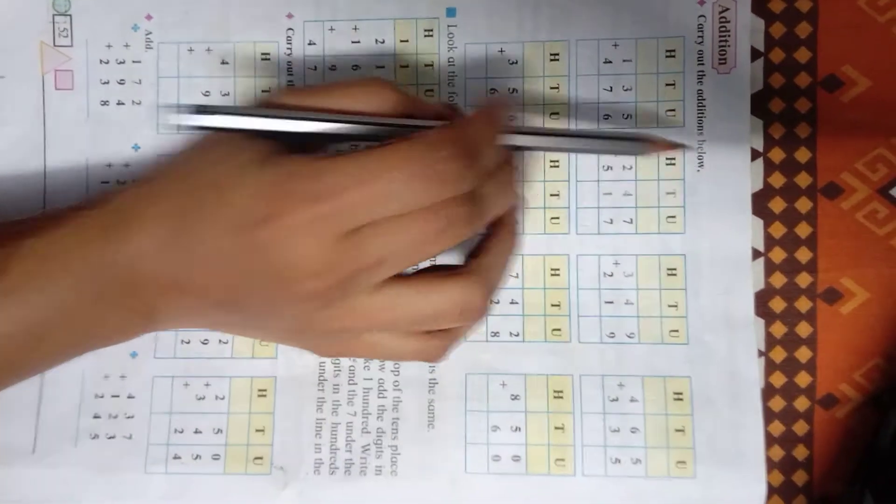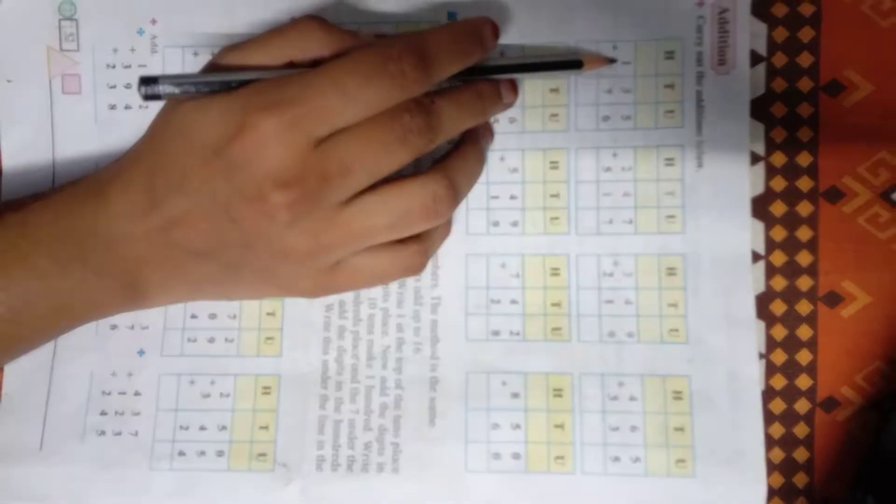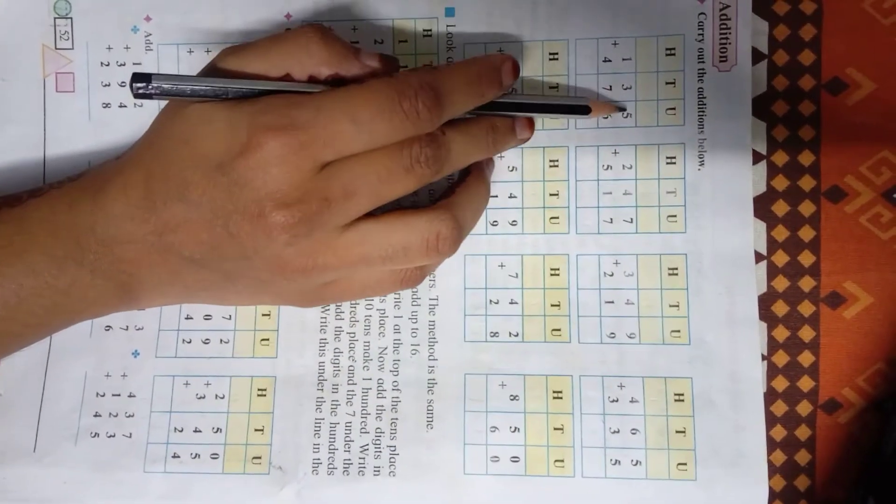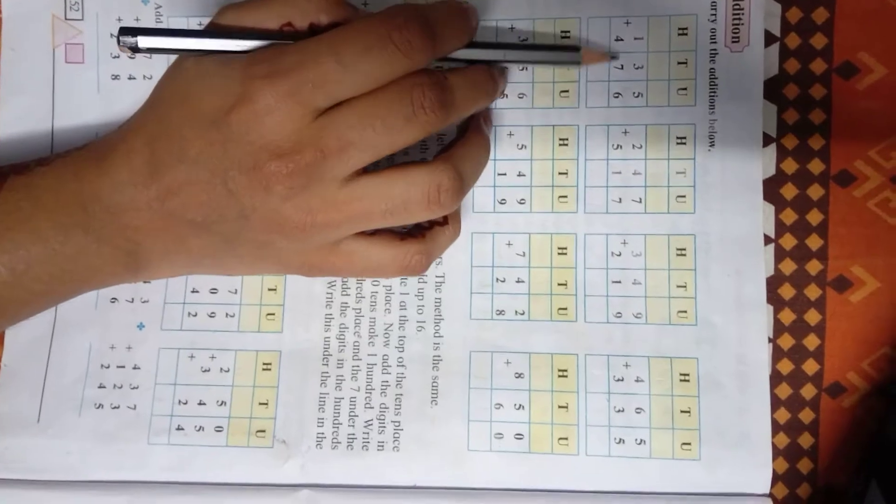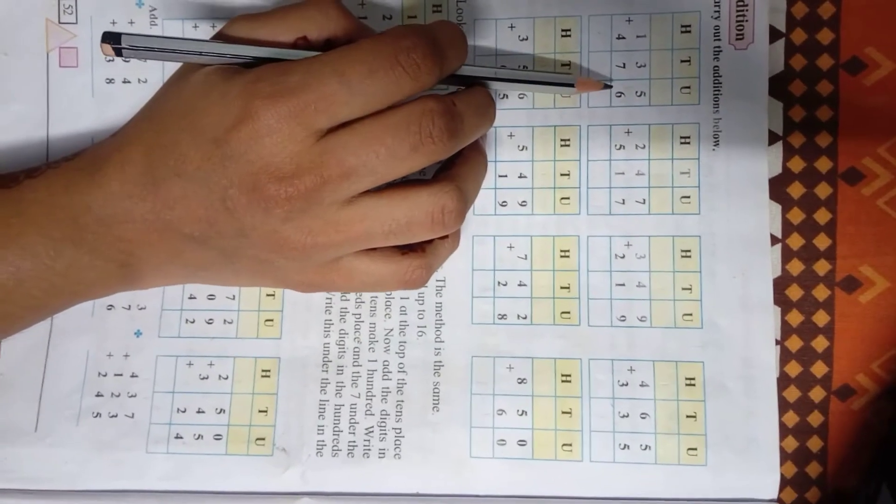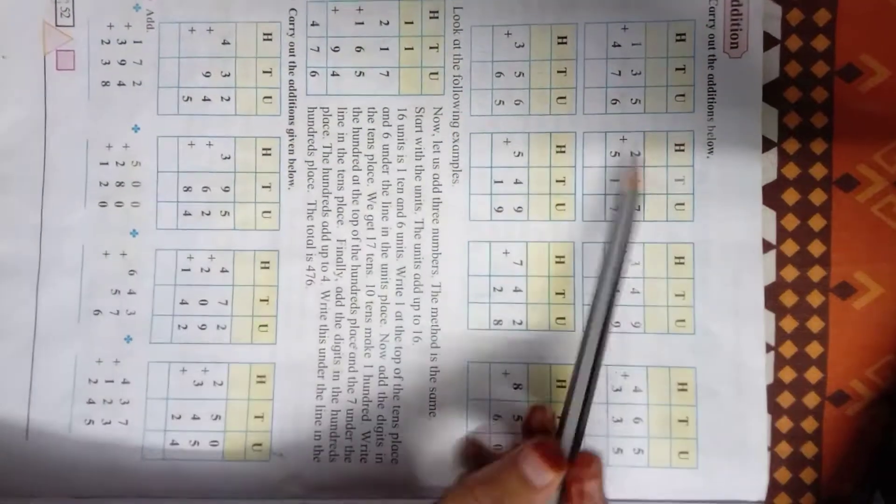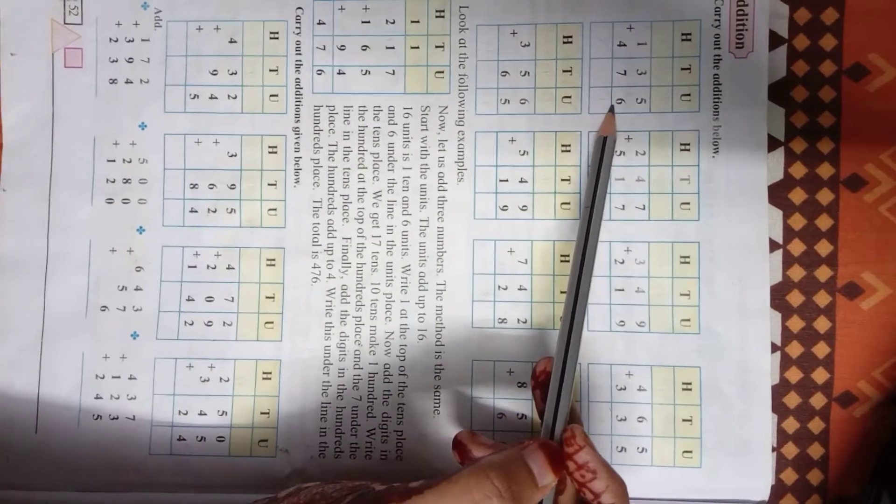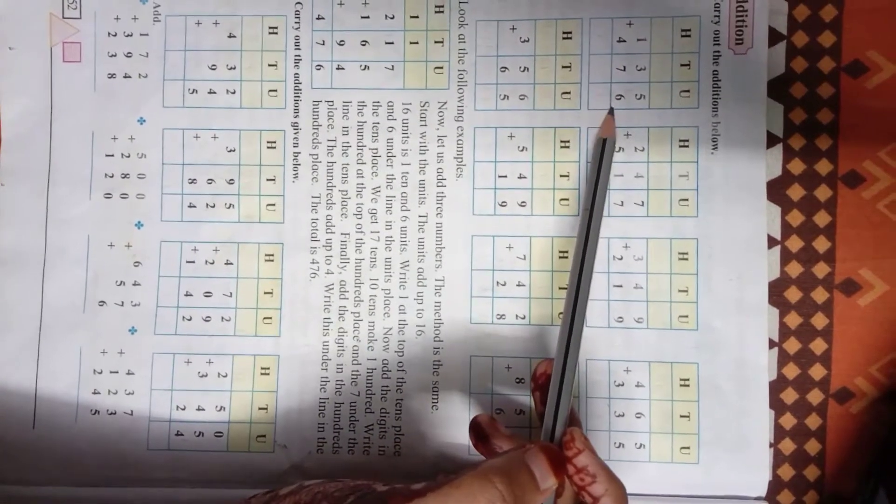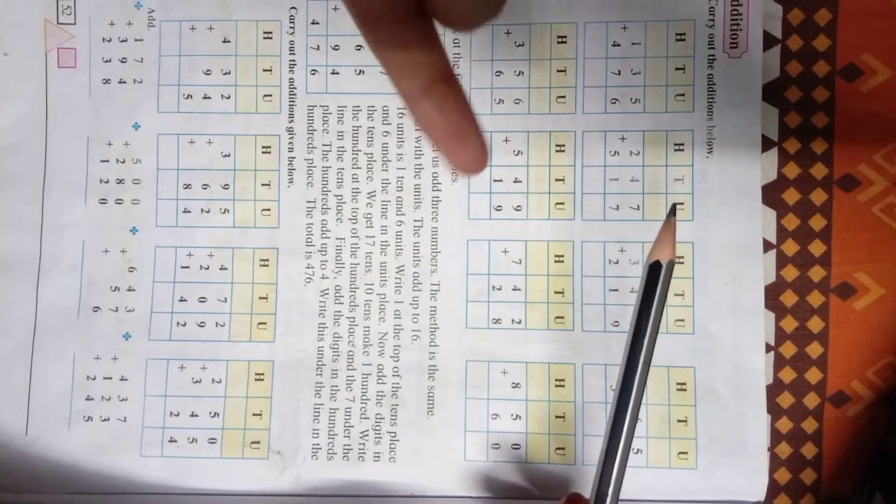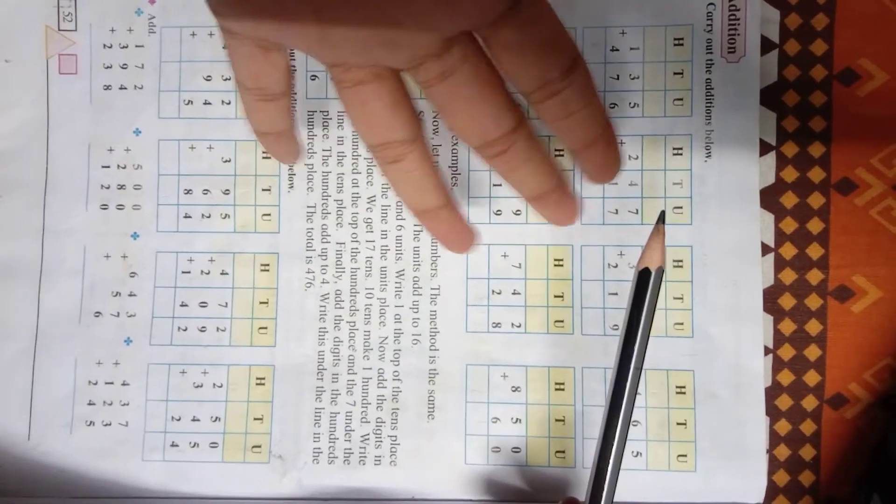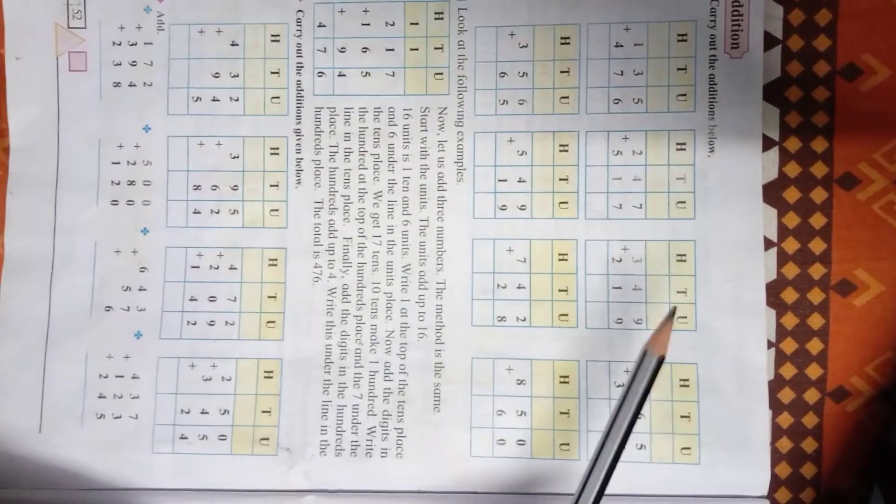Let's start here: 135 plus 476. Now what we will do? So 5 plus 6, how much? After 5 we will count 6 fingers, so 6, 7, 8, 9, 10, and 11.